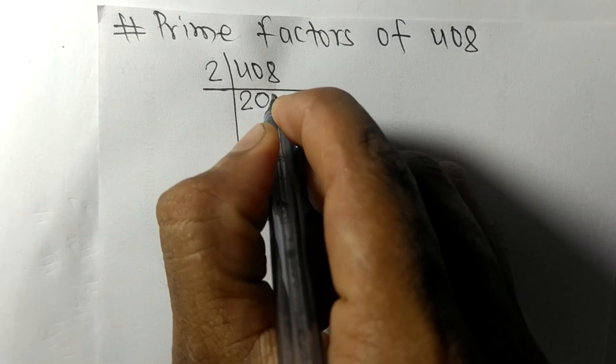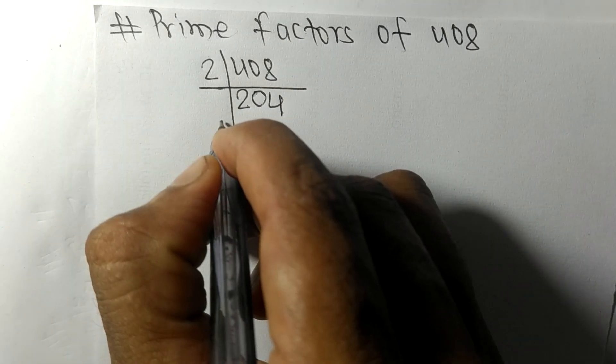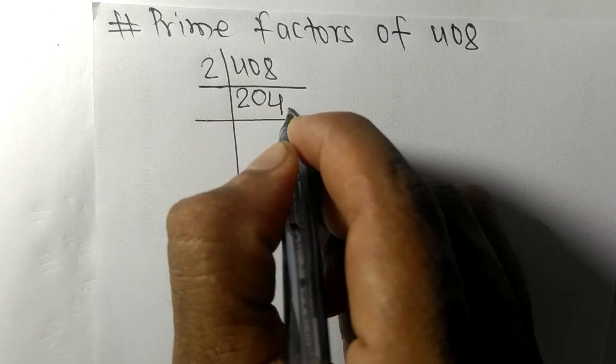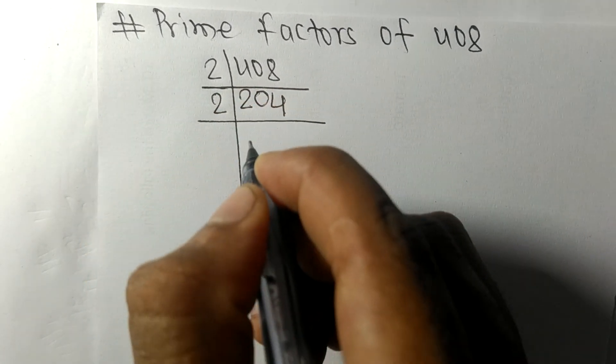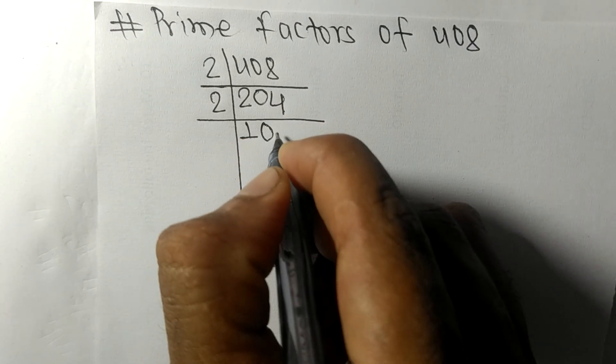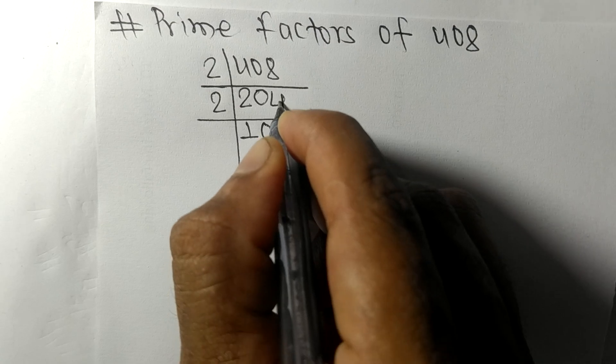2 times 1 means 2, 2 times 0 means 0, 2 times 2 means 4. Again we have even number 2 so it is divisible by 2.